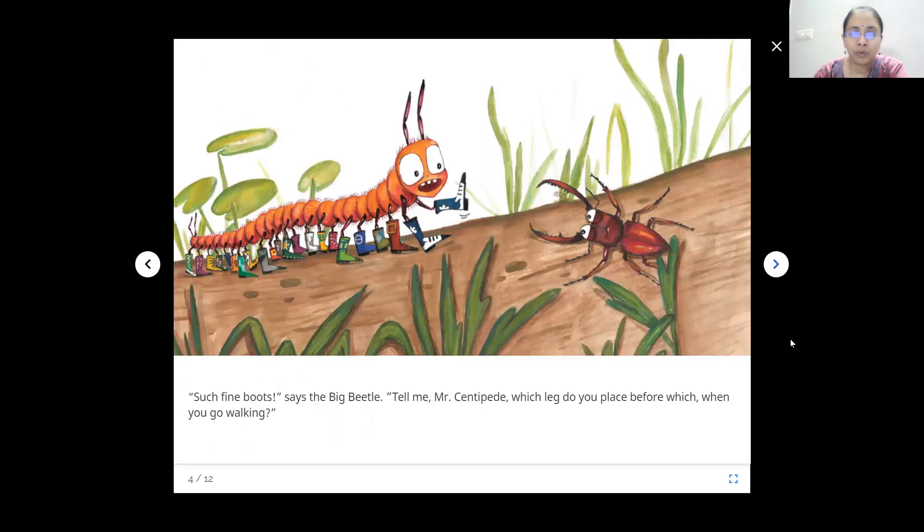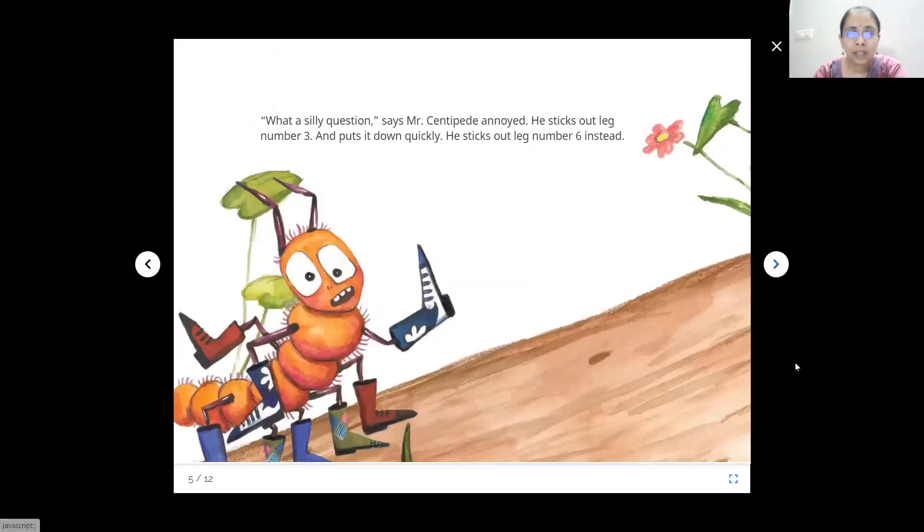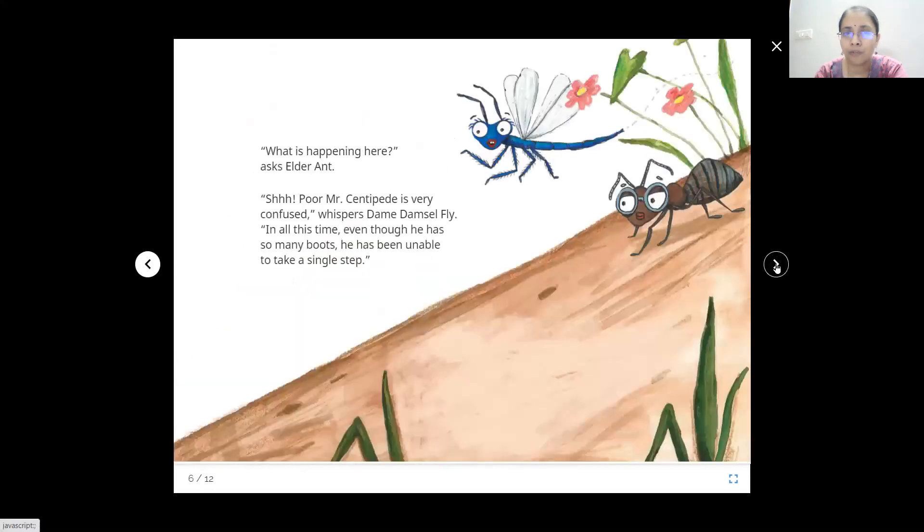Such fine boots, says the Big Beetle. Tell me, Mr. Centipede, which leg do you place before which while you go walking? Let's see. What a silly question, says Mr. Centipede, annoyed because last time he got confused. Now he sticks out leg number three and puts it down quickly, then he sticks out leg number six instead. He doesn't know which one to put out first.